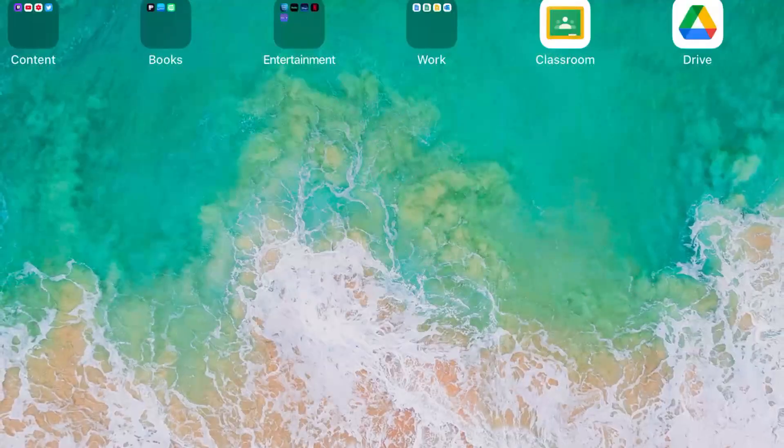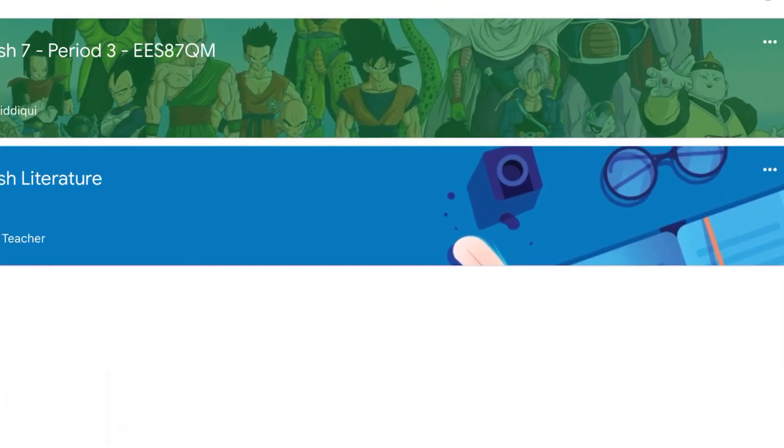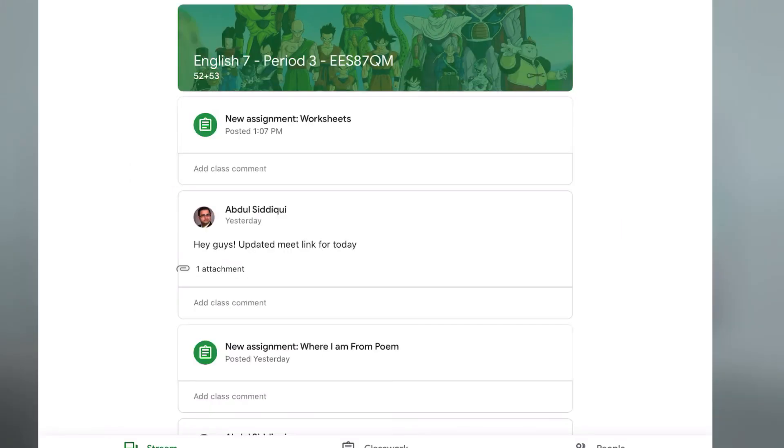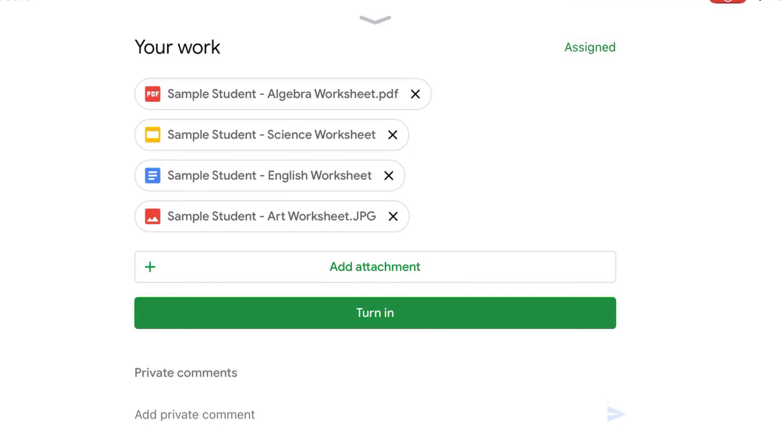So you're going to start by opening up the Classroom app and go to the class where your teacher has assigned something. So my teacher assigned me this assignment called Worksheets. And sometimes, if the teacher has done it correctly, you're going to see all the assignments in the Your Work area of the assignment. Let's go ahead and click on that. Now, if you notice, there's four different types of documents here. There's a PDF, there's a slide, there's a Word Doc, and there's an art worksheet, which is a picture. So let's start from the top, the algebra worksheet, which is a PDF.